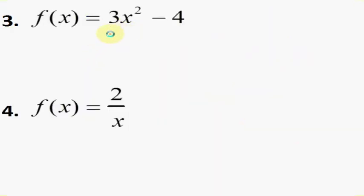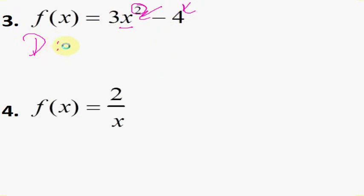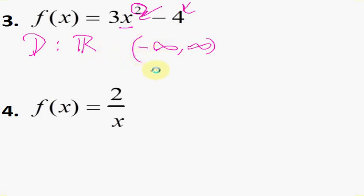To do these problems, we first find out the nature of the function. There's nothing I can put into x that will make this function undefined. This is a polynomial — specifically, it is a quadratic and a binomial: it has a degree of 2, which is why it's a quadratic, and it has two terms, which is why it's a binomial. Any polynomial will have a domain that is all real numbers — written as negative infinity to positive infinity.